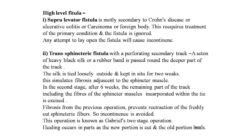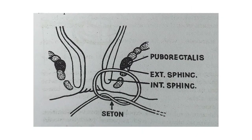For transphincteric fistula with a perforating secondary tract, a seton of heavy black silk, ksha sutra, or rubber band is passed around the deeper part of the tract. The silk is tied loosely outside and kept in situ for two weeks, stimulating fibrosis adjacent to the sphincter muscle. In the second stage after six weeks, the remaining part of the tract including sphincter muscle fibers incorporated within the tie is excised. Fibrosis from the previous operation prevents retraction of the freshly cut sphincteric fibers, so incontinence is avoided — cutting and healing of the fistula tract occur simultaneously. This operation is known as the Gabriel two-stage operation.